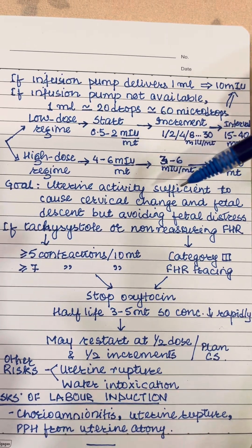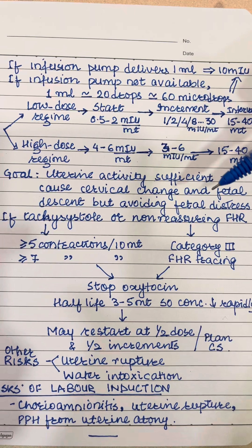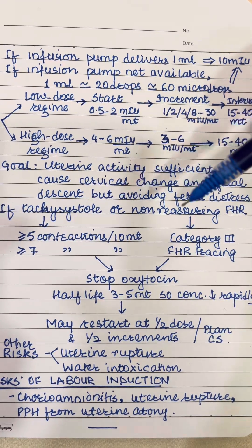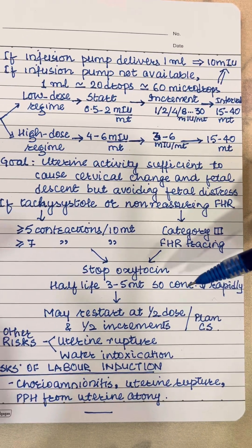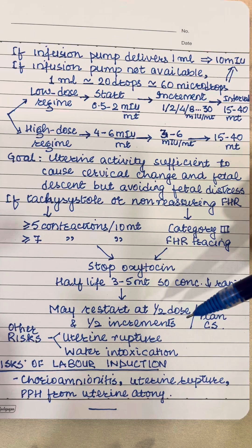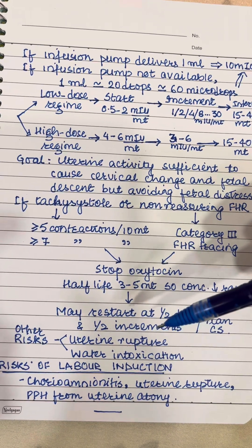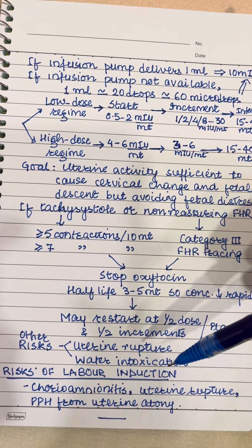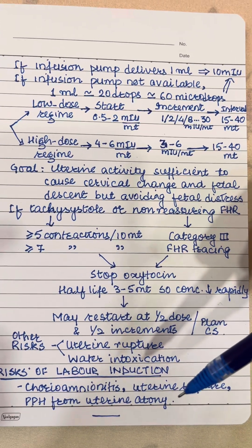The goal is to attain uterine activity sufficient to cause cervical change and fetal descent, while avoiding fetal distress. In case of tachysystole or a non-reassuring fetal heart rate tracing, stop oxytocin and restart at half the dose with half the increment, or plan a caesarean section. The risks with oxytocin are uterine rupture and water intoxication. General risks of labor induction include chorioamnionitis, uterine rupture, and PPH from uterine atony.